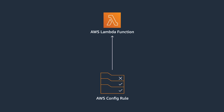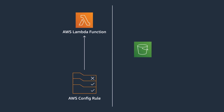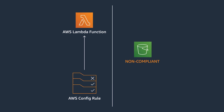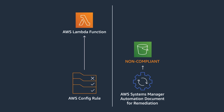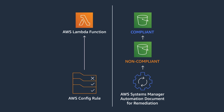Another really great feature of Config is the ability to remediate non-compliant resources. Config is going to let you perform remediation actions in response to your non-compliant items. These are done using Systems Manager automation documents, so we can trigger some type of mechanism to put the resource back into its desired state. In our last example, the automation document would modify the S3 bucket from non-compliant with public access to compliant with no public access.